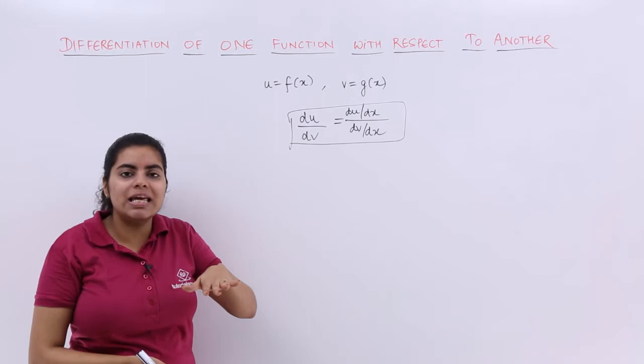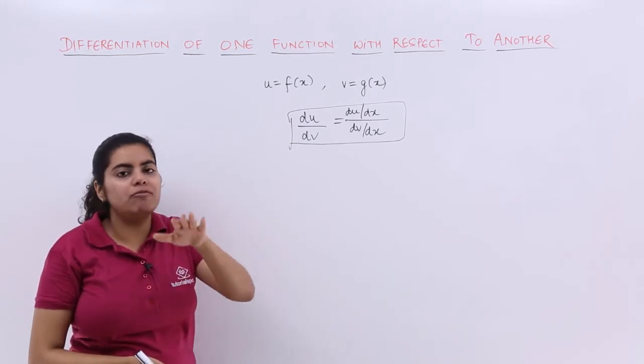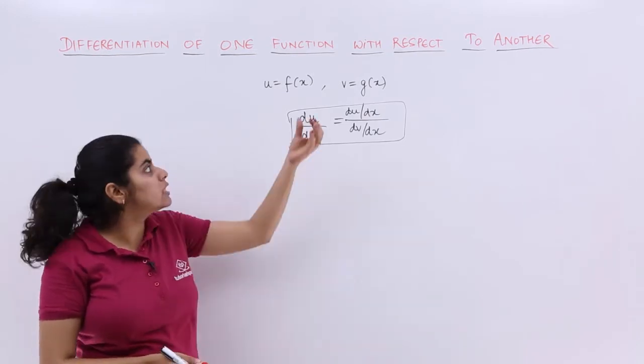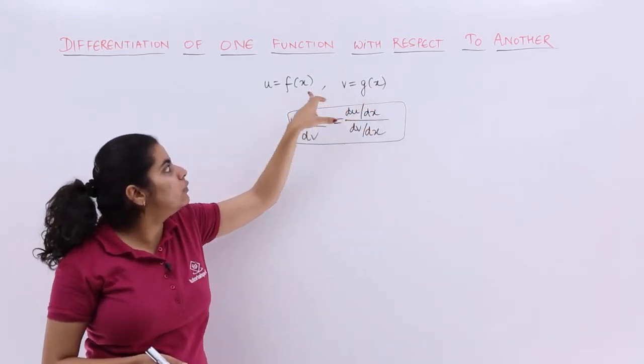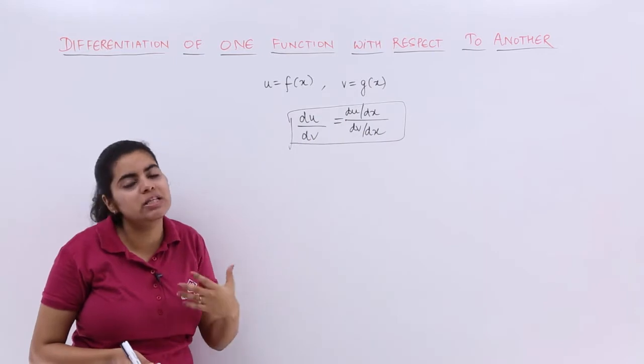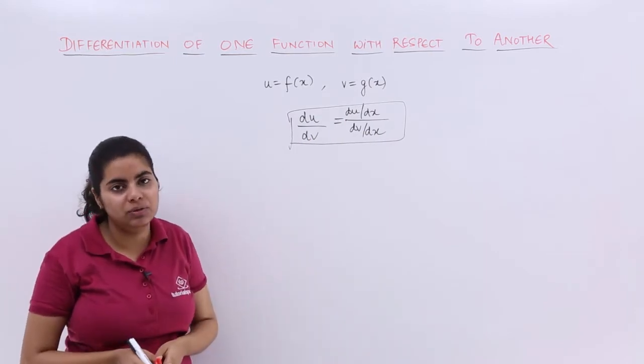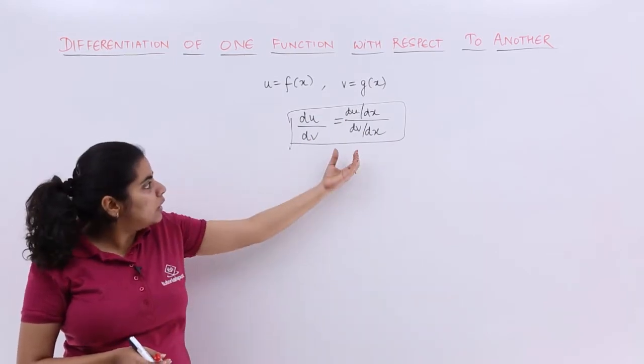The overview is that you have to differentiate the two functions with respect to whatever variable they involve, and the condition is that both are involved with the same variable. That means both with x or both with y, and then find the quotient.